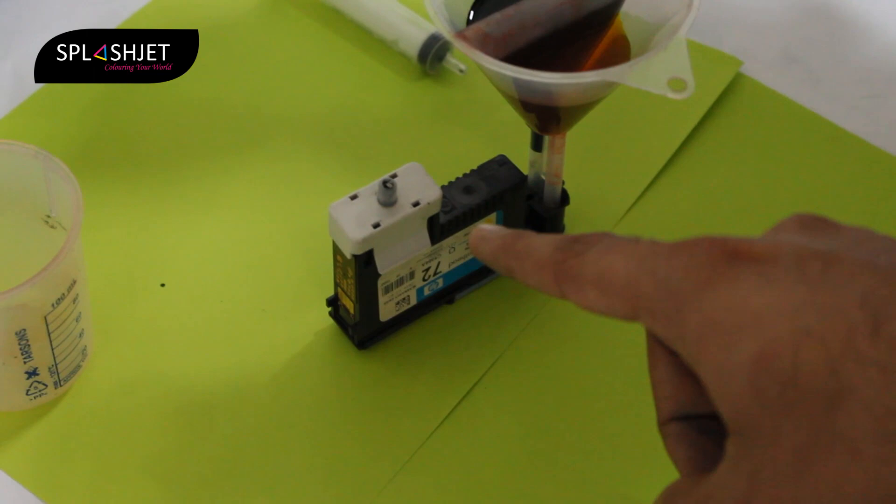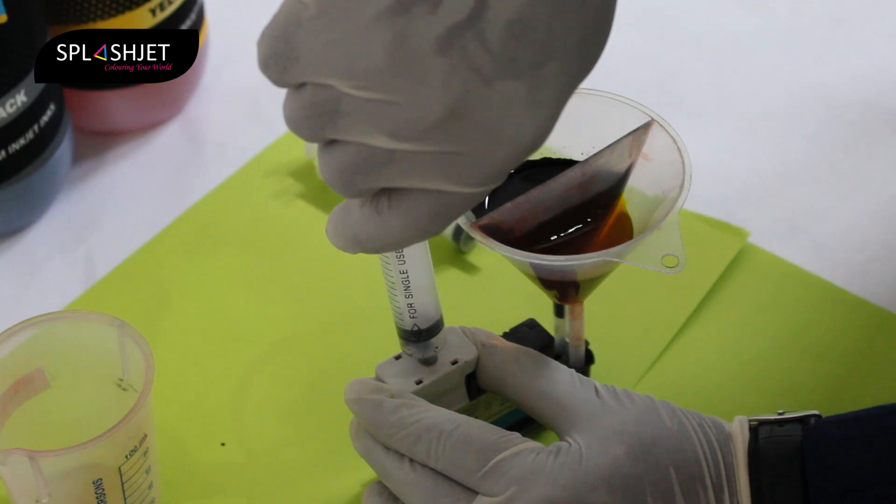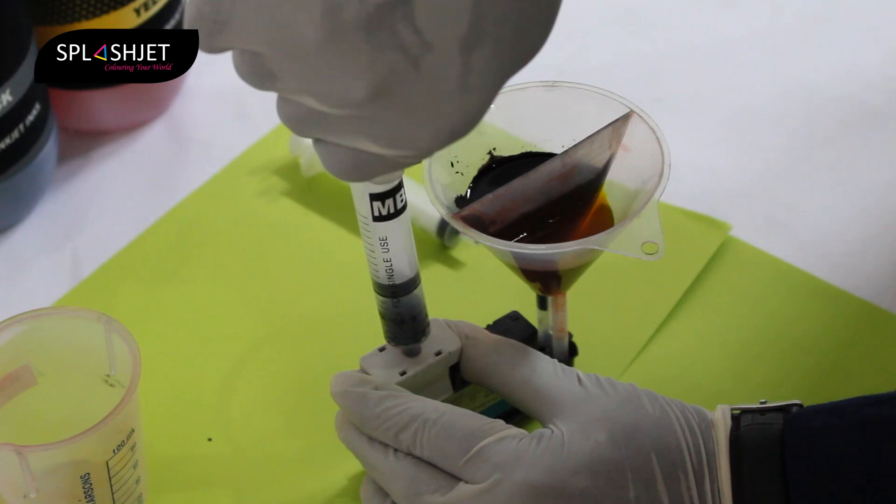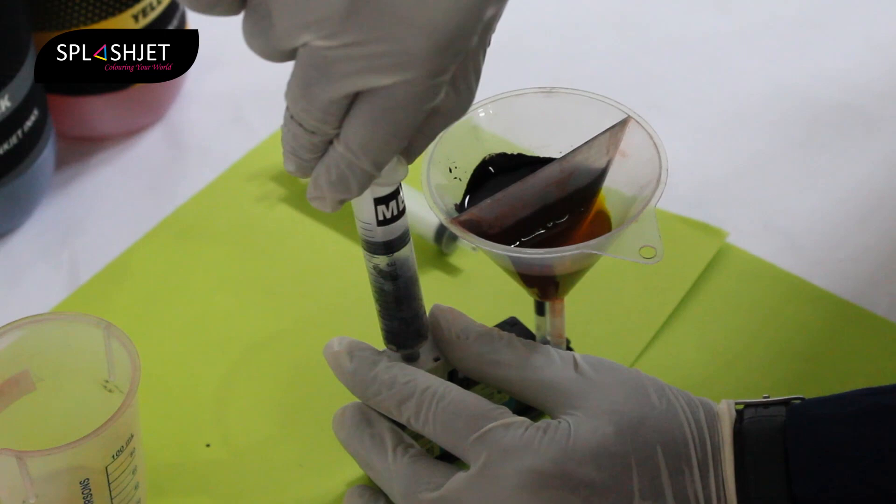And now you have to gently suck air from the print head. Initially, a lot of air bubbles will be there which will be removing air inside the print head. Afterwards, you will find a smooth flow of ink which will indicate proper priming of the print head.